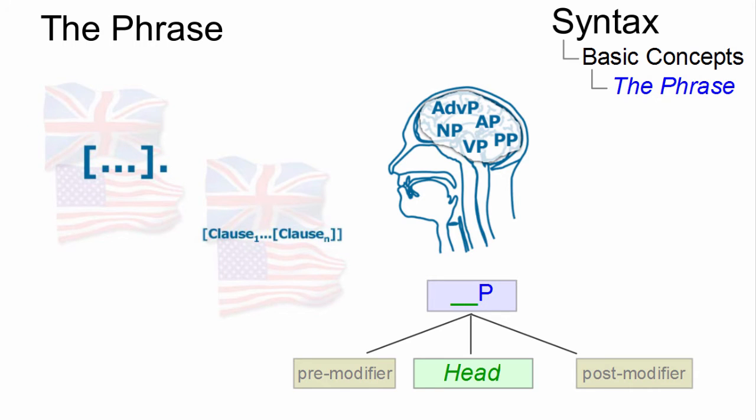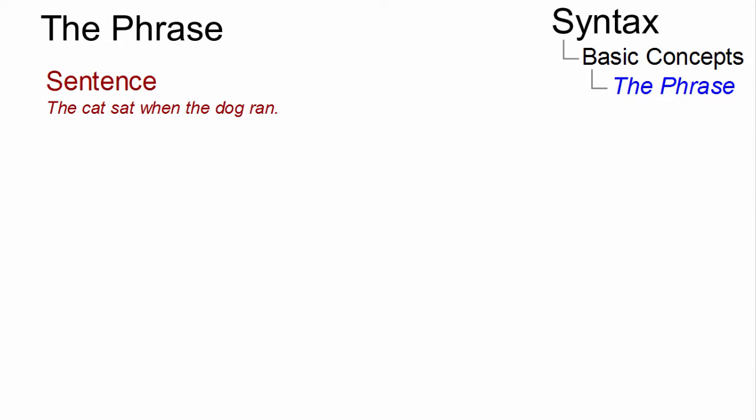Phrases are intermediate constituents between sentences and words. Here is a sentence: The cat sat when the dog ran. This sentence consists of two clauses: the main clause 'the cat sat' and the subordinate clause 'when the dog ran.'